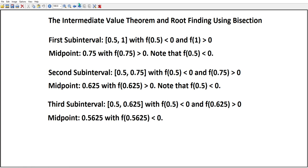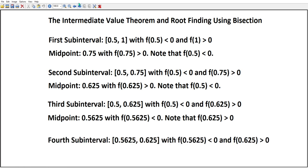We bisect again, 0.5625, and the function value there is less than zero. We note that it's positive at 0.625. So we've got a new interval, [0.5625, 0.625], where the left-hand endpoint is negative, the right-hand endpoint is positive. So there is a root someplace in that interval.